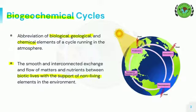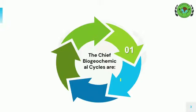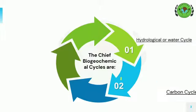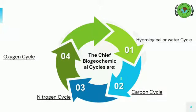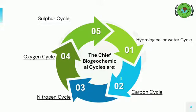It is the pathway through which a chemical substance moves through biotic as well as abiotic compartments of the earth. Now in this video, we will see in detail 5 chief biogeochemical cycles: first hydrological cycle, second carbon cycle, third nitrogen cycle, fourth oxygen cycle and last sulfur cycle.